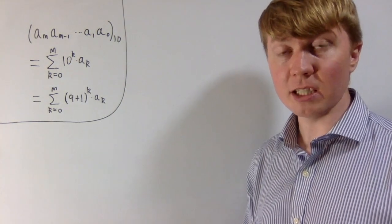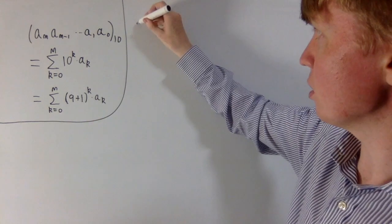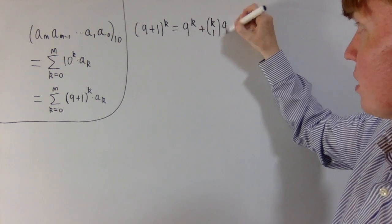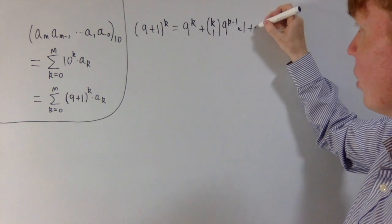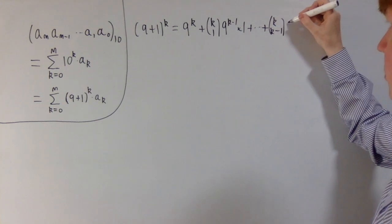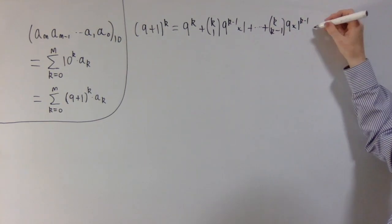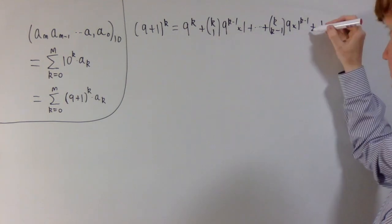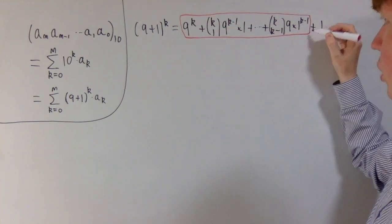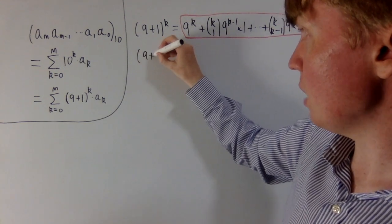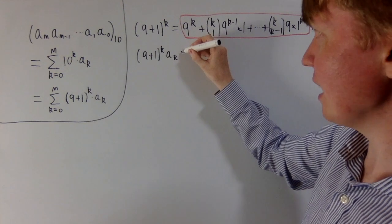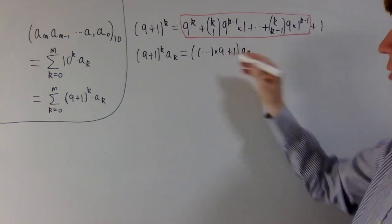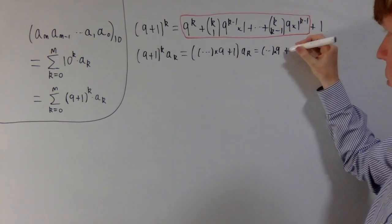There are a few ways of seeing why the divisibility by 9 rule works. One approach is to think about (9 + 1) to the power of k and its binomial expansion. We get 9^k plus k-choose-1 times 9^{k-1}, and so on, all the way to k-choose-(k-1) times 9, plus 1. All terms other than the final 1 have a factor of 9, so (9+1)^k is a multiple of 9 plus 1. This means (9+1)^k times a_k is just some multiple of 9 plus a_k — a multiple of 9 plus a_k.